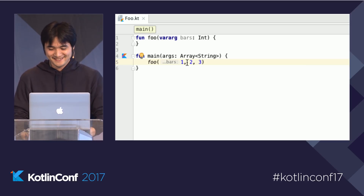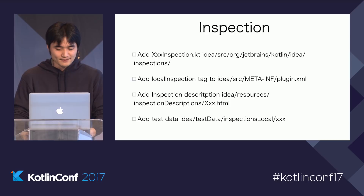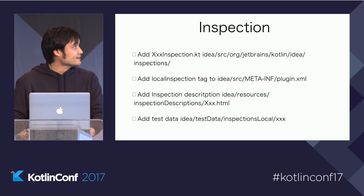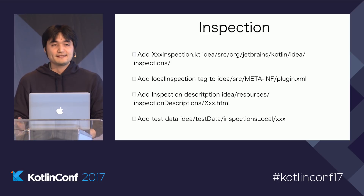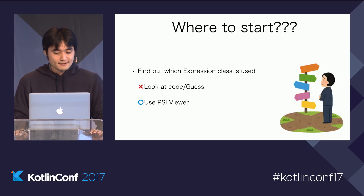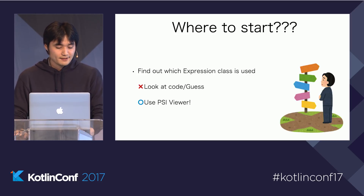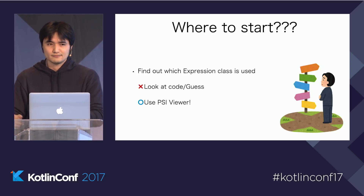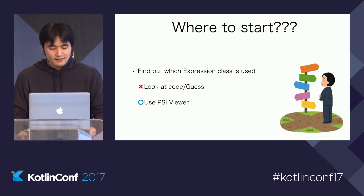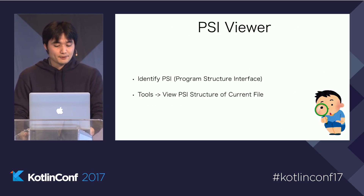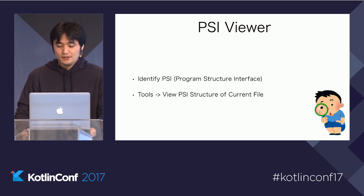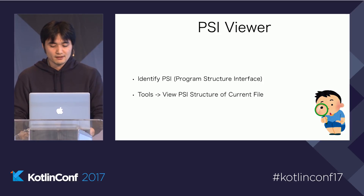Let's create this feature. Here is a list of files you need to implement when you create a new inspection — where XXX is the inspection name. In this sample, 'Remove Redundant Spread Operator' is the XXX part. The first file is implementing the inspection. To implement the inspection class, the first thing you need to do is find out which expression class is used for the syntax. It's impossible to identify it by just looking at the code, so use PSI Viewer, which is bundled in the child IDE.